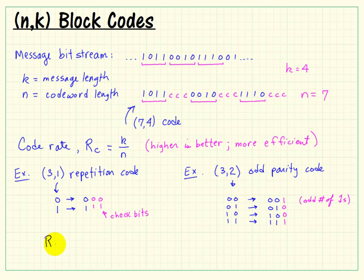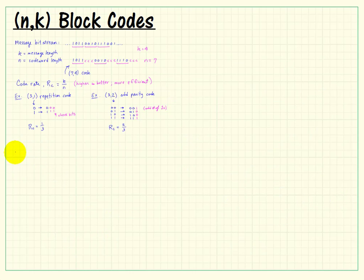Now let's consider the code rate that results from these 2 different types of codes. The code rate is 1 3rd for the repetition code or 33%. The code rate for the odd parity code is 2 3rds or 66%. So we would conclude that the odd parity code is actually twice as efficient as the repetition code.